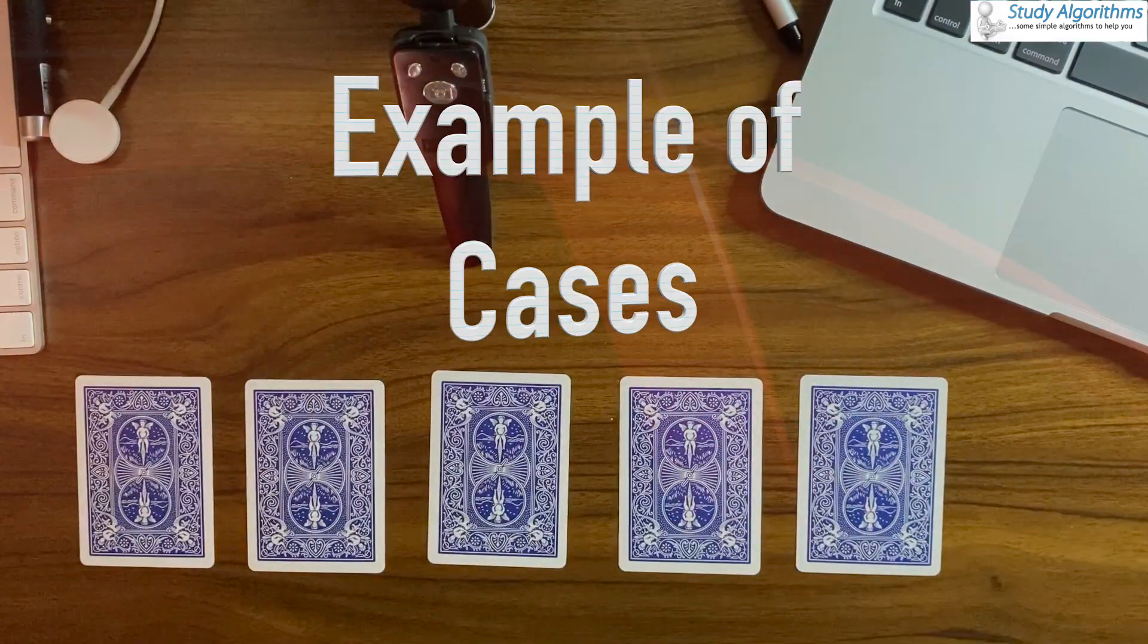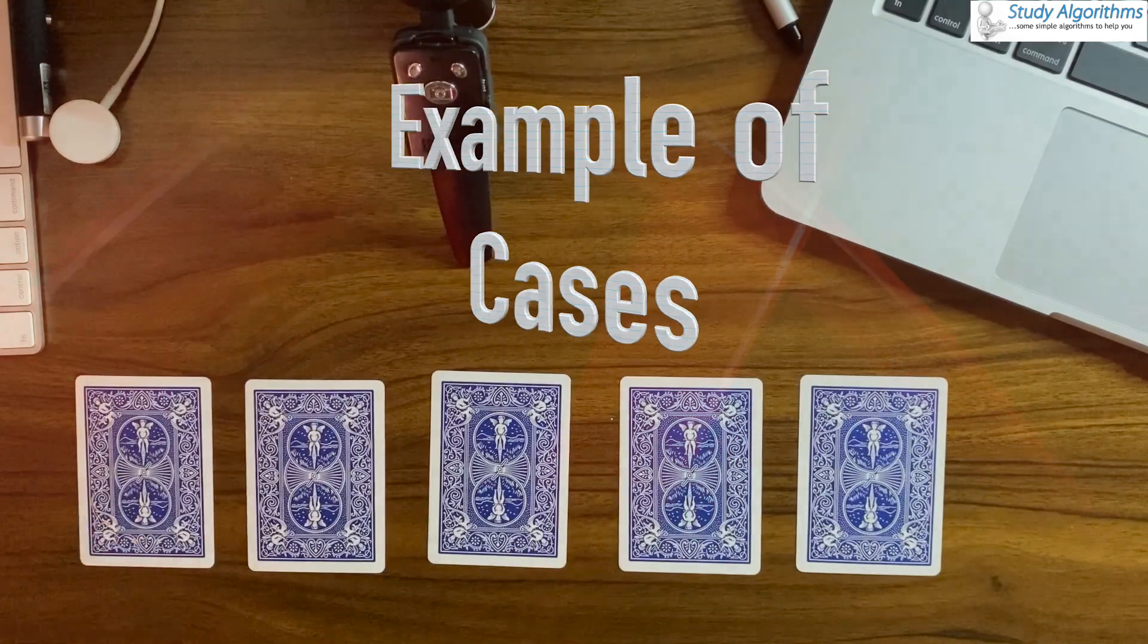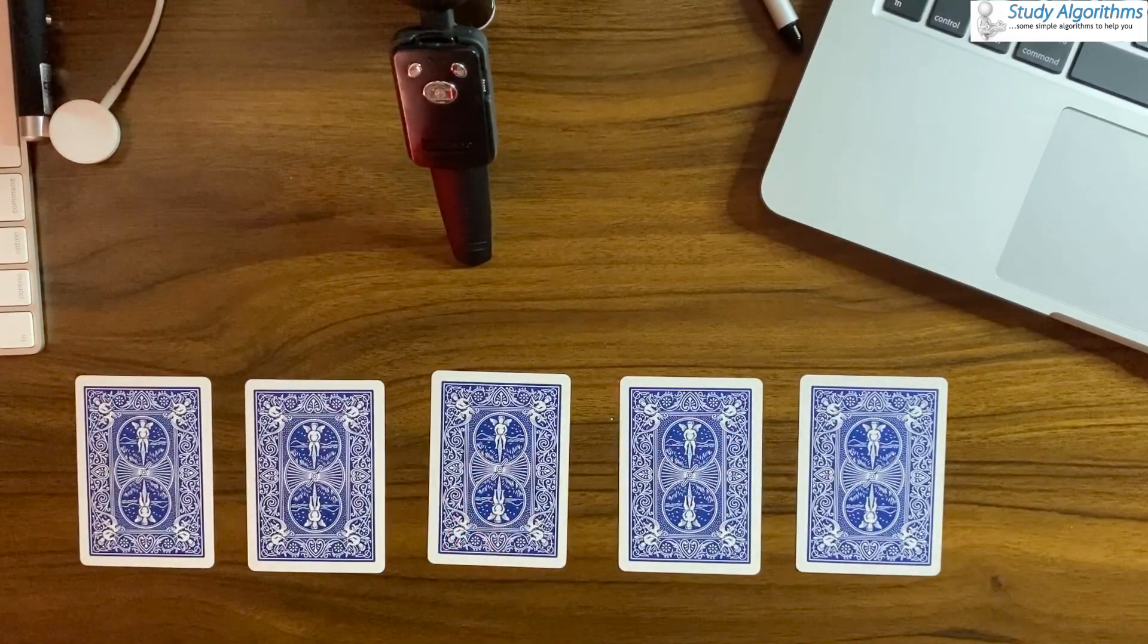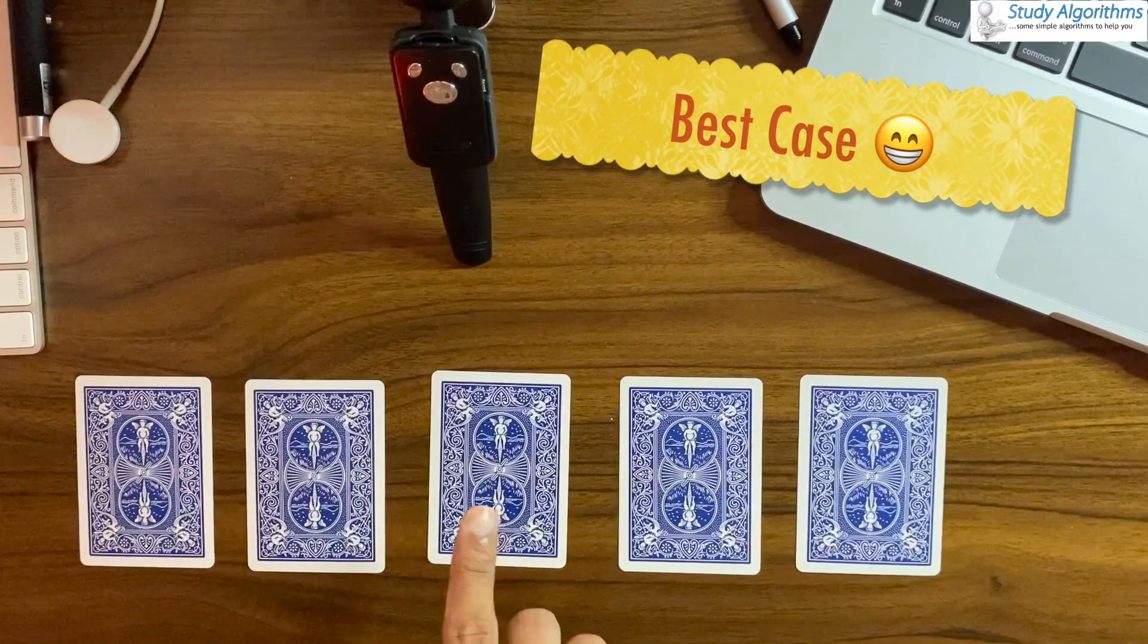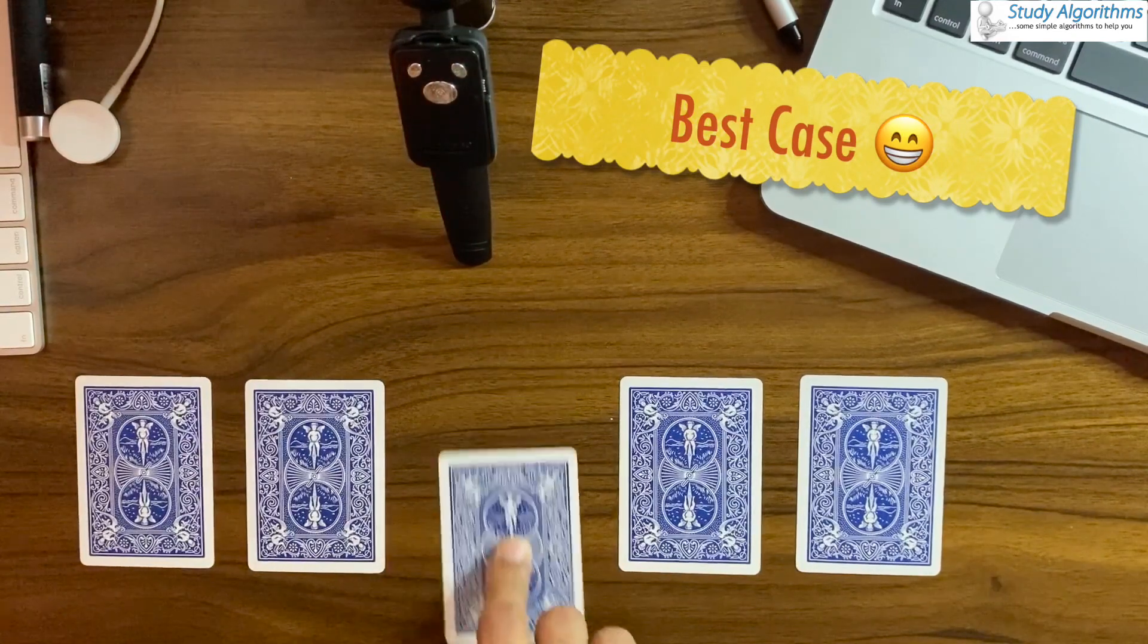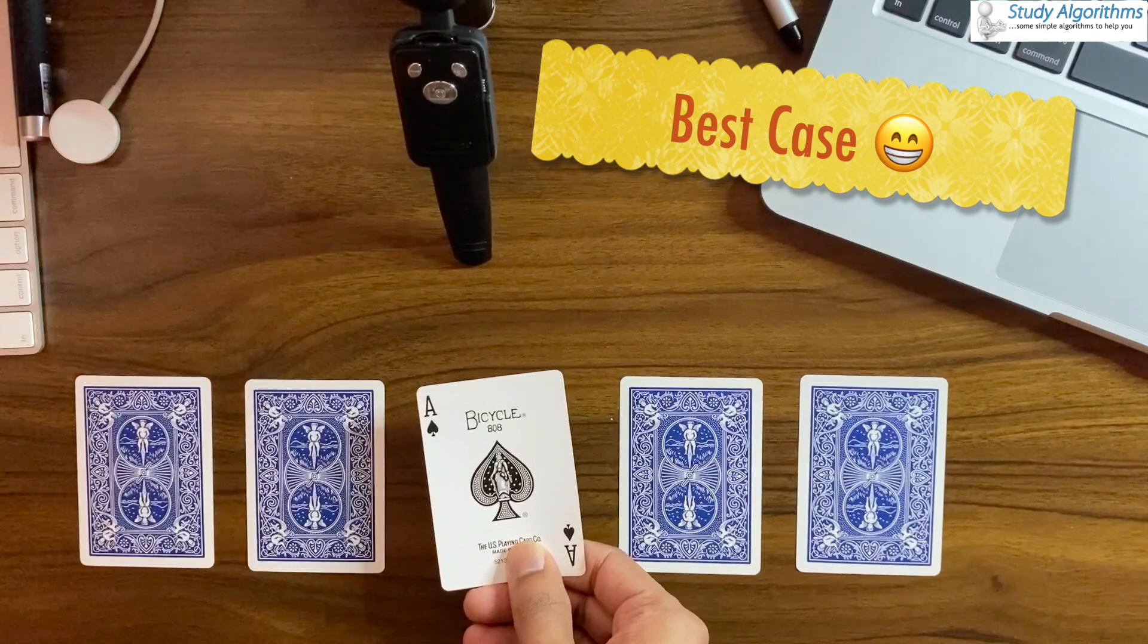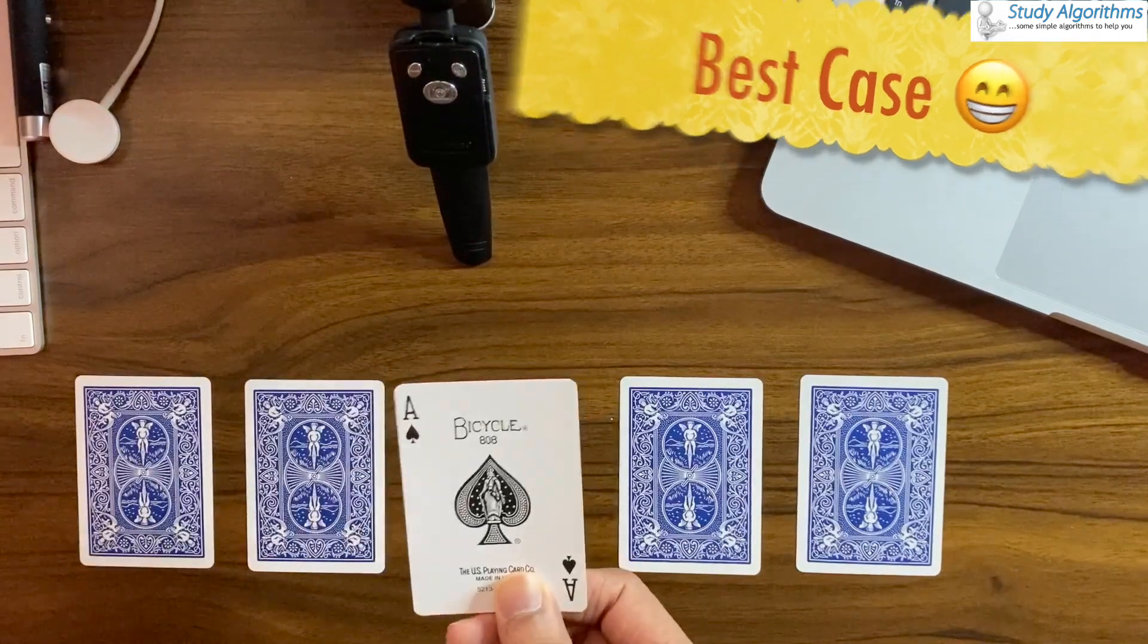Suppose I have five cards on the table. All I know is that one of them is an ace and I have to find it out. The best case scenario would be that I pick up a card and it turns out to be an ace. Hooray, we won. And this is the best case.